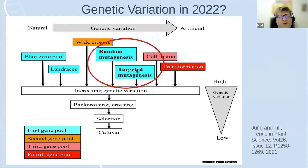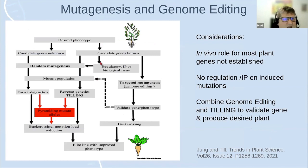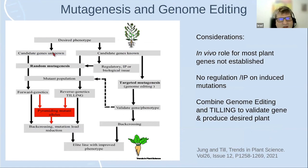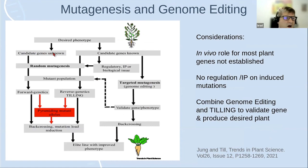When might you want to choose one versus the other? We have a decision tree in the review paper. You start with your desired trait or phenotype, then ask: do you know candidate genes to target? In banana, there are target genes for disease resistance, but there are hundreds of them. In that case, we decided to do forward genetics and let the phenotype do the talking — you can be successful without any molecular biology. If you don't know the candidate genes or have too many, go through a forward genetic path, then do back-crossing, remove background mutations, and pyramid alleles.